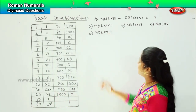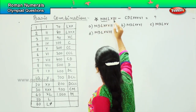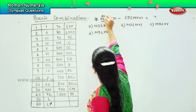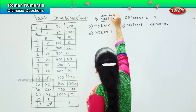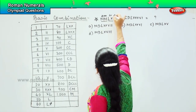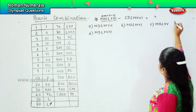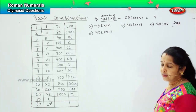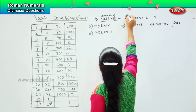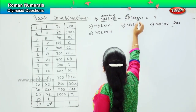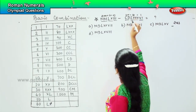Now let us try to find the numerical value here. Double M means 2000, LX means 60, and triple I means 3, which means the value is 2063. Next, CD means 400, L triple X means 80, and VI means 6, which is 486.